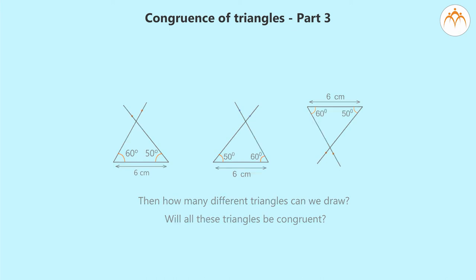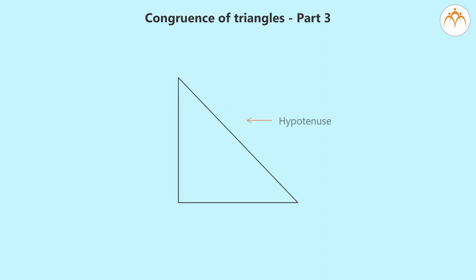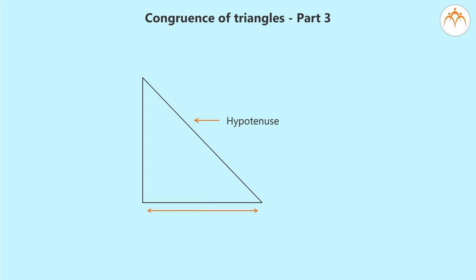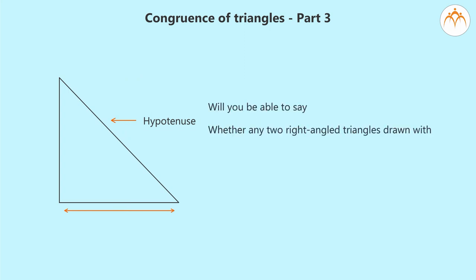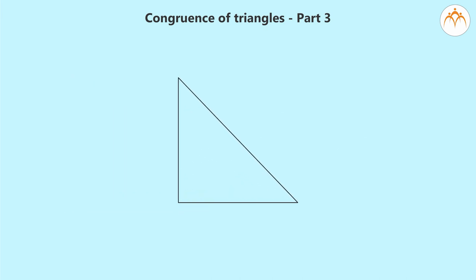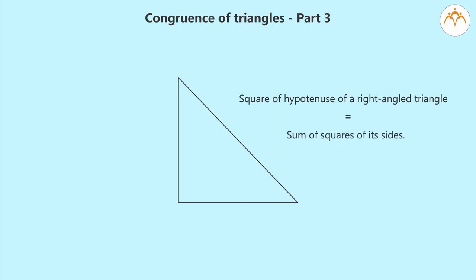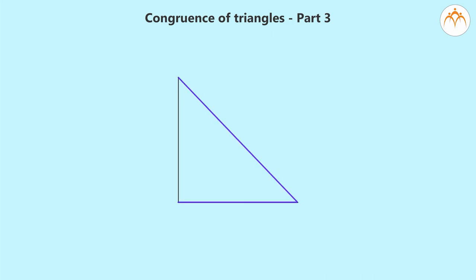Now let us assume we have to draw a right-angled triangle whose hypotenuse and one side are known. Will any two right-angled triangles drawn with this information be congruent? Think about it. How do we know a triangle is right-angled? Remember the theorem about the sides of a right-angled triangle: the square of the hypotenuse equals the sum of the squares of its other two sides. By the Pythagorean theorem, we can find the length of the remaining side.